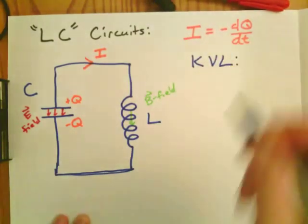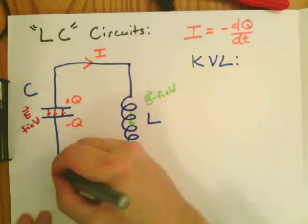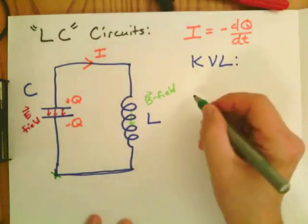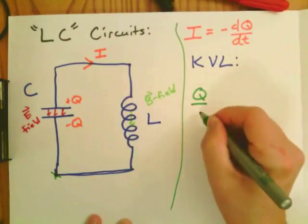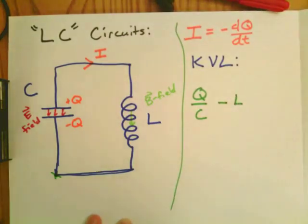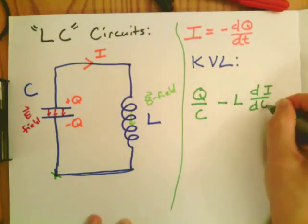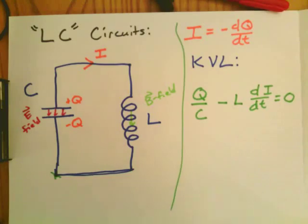So we use Kirchhoff's voltage law. We pick a reference point, say the lower left corner, and we just write down the voltage rule for the capacitor is Q over C, minus the voltage rule for the inductor, LdI/dt. We set that equal to zero, according to Kirchhoff's voltage law.